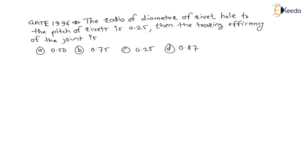The question is: the ratio of diameter of rivet hole to the pitch of rivet is 0.25, that is diameter of hole divided by the pitch of rivet is equal to 0.25.